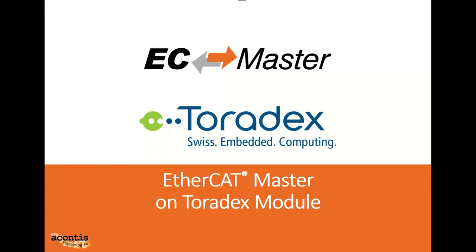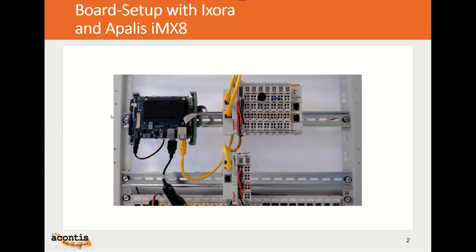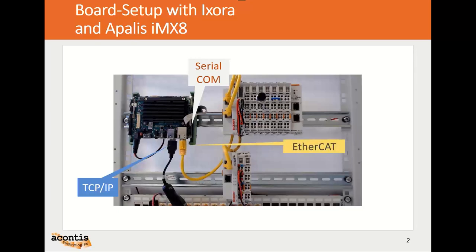Hi, my name is Holger Ölhaf, I'm a software developer on the EasyMaster team at Acontis. I'd like to present how to get started with EasyMaster on the Apalis i.MX8. Here we have a Toradex Apalis i.MX8 module on an Ixora carrier board, with an additional USB-to-Ethernet device for TCP/IP connection. The host is connected by serial interface. The Ethernet port of the Ixora board is connected to two Beckhoff EtherCAT couplers with several IO terminals, and one input terminal is equipped with a switch for the later demo.